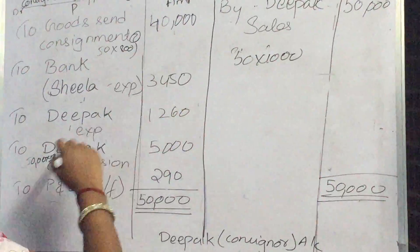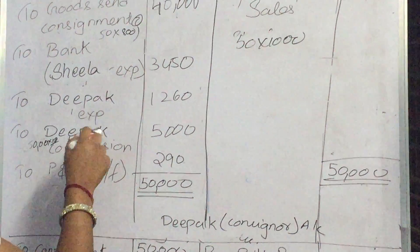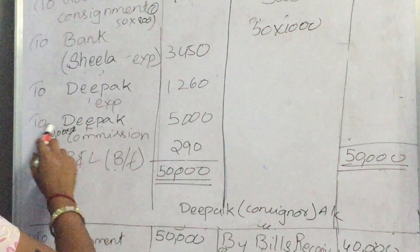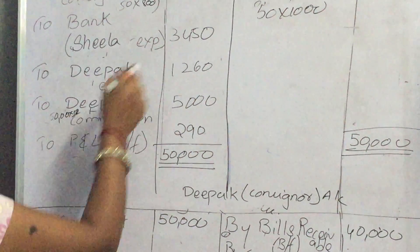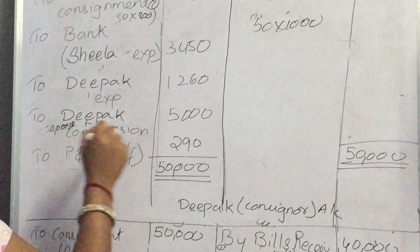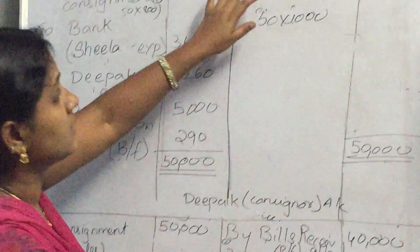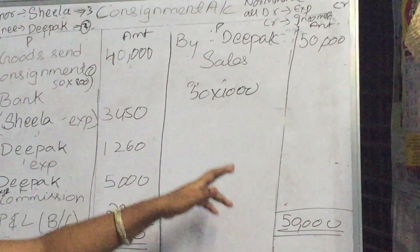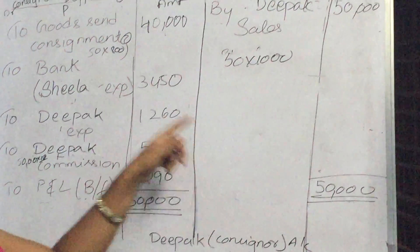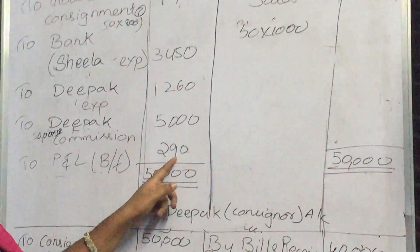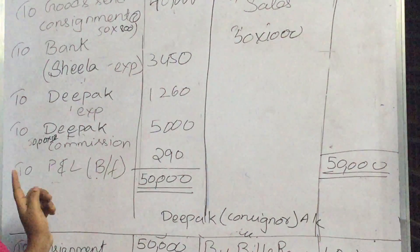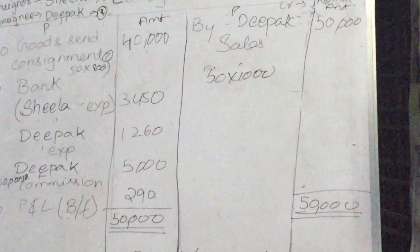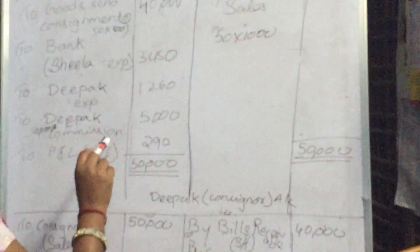3,450 next. Two Deepak expenses — same, you should sum up and take it in. Next, Deepak commission 10%. How much is the sales amount? 50,000 into 10 by 100, you'll get 5,000. Next, Deepak sales is 50,000. Then the balancing figure is 50,000 minus all the expenses — you'll get 290 as a balancing figure. You should transfer to P&L account. This is the consignment account.